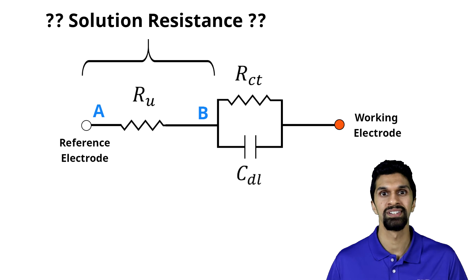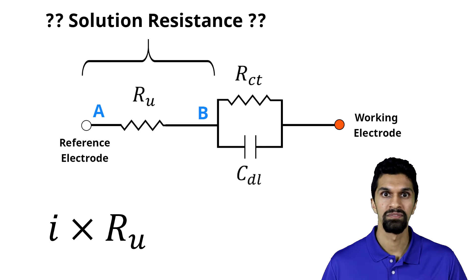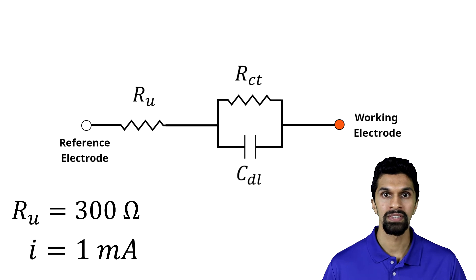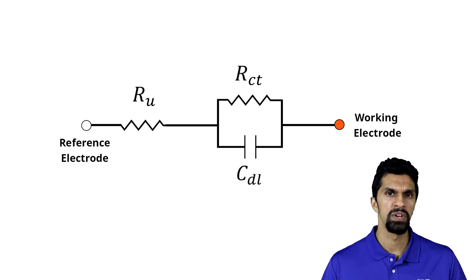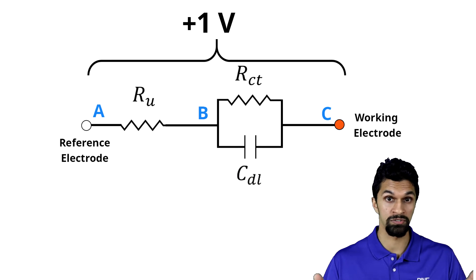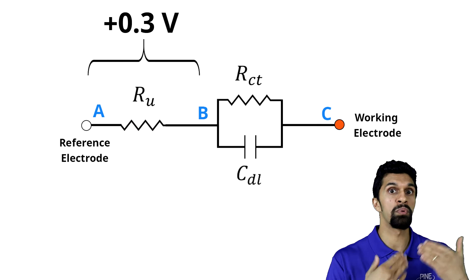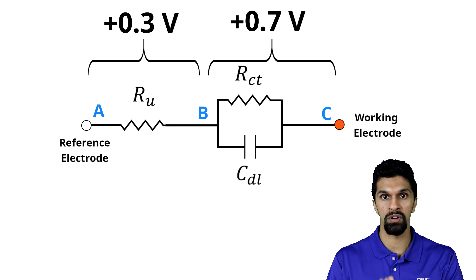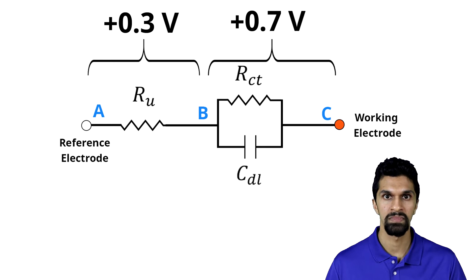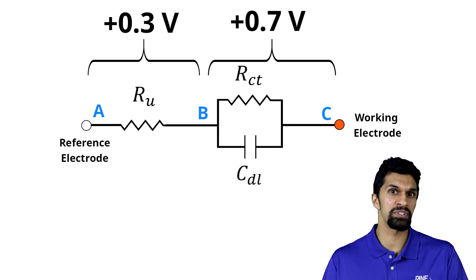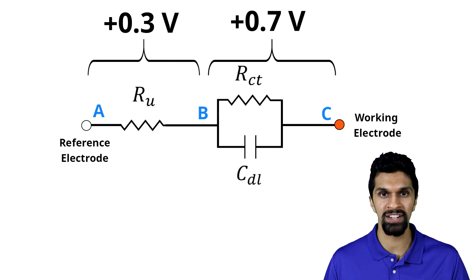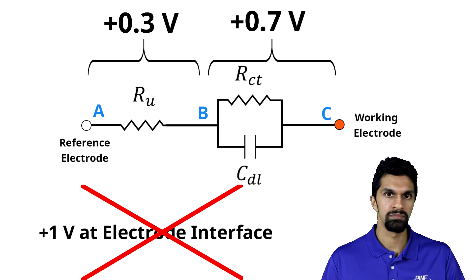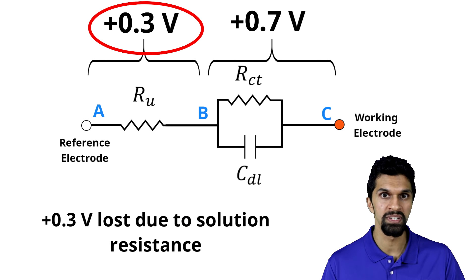How much is across the solution resistance? Well, it's the current times the resistance via Ohm's law. So if I have a 300 ohm resistor for RU and I pass one milliamp of current, that is equal to 0.3 volts. So when I'm applying plus one volt across the working electrode interface, 0.3 volts is consumed by the solution resistance and the remainder 0.7 volts is across points B and C, the working electrode interface. If I'm a researcher and I want to apply plus one volt to drive my electrochemical reaction, I'm actually effectively applying only 0.7 volts — 0.3 volts is consumed in solution resistance. This leads to a lot of inaccuracies in doing electrochemistry.